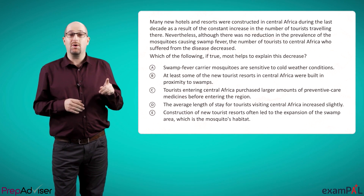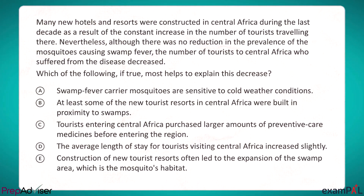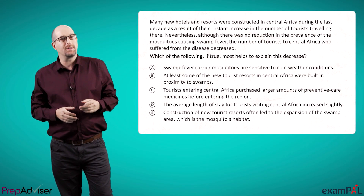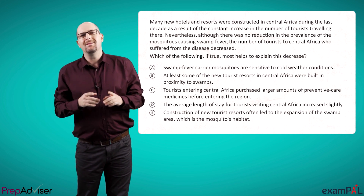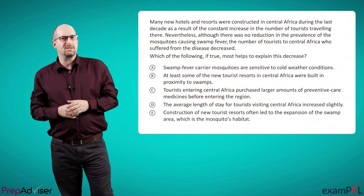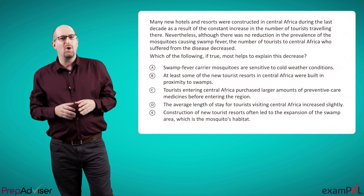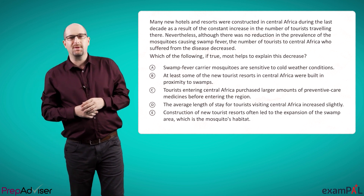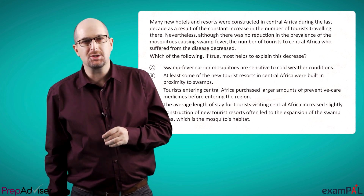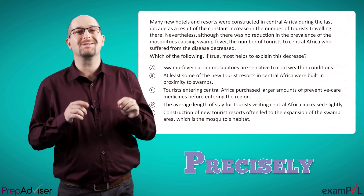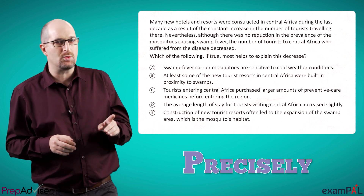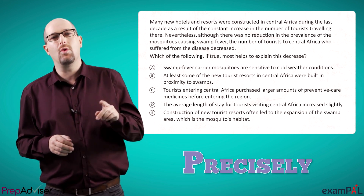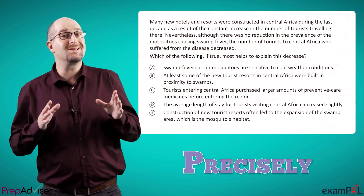Let's look at an example. You may want to pause the video and answer it. Many new hotels and resorts were constructed in central Africa during the last decade as a result of the constant increase in the number of tourists traveling there. Nevertheless, although there was no reduction in the prevalence of the mosquitoes causing swamp fever, the number of tourists to central Africa who suffered from the disease decreased. Which of the following, if true, most helps explain this decrease? In this question, the passage gives us enough information so we can answer precisely. If changes in the number of mosquitoes were not the cause of the decrease in tourists suffering from swamp fever, it must be the tourists themselves who are better protected against the disease — which is exactly what C tells us.